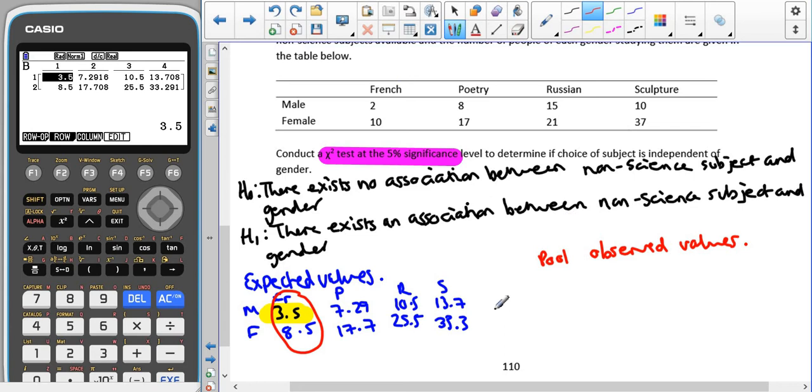For this section, to make sure that we definitely get the marks, I'm going to rewrite the full names of the titles for each column and row. So we still have male and female, that's not changing. We're still going to have poetry. We're still going to have sculpture. But instead of French and Russian being separate, we're going to have a languages one instead. So the poetry one, the frequencies stay the same, so 8 and 17. Same for sculpture, they stay as 10 and 37. But for languages, we're going to have, for males, 2 plus 15, which gives us 17. And then 10 plus 21, which gives us 31.